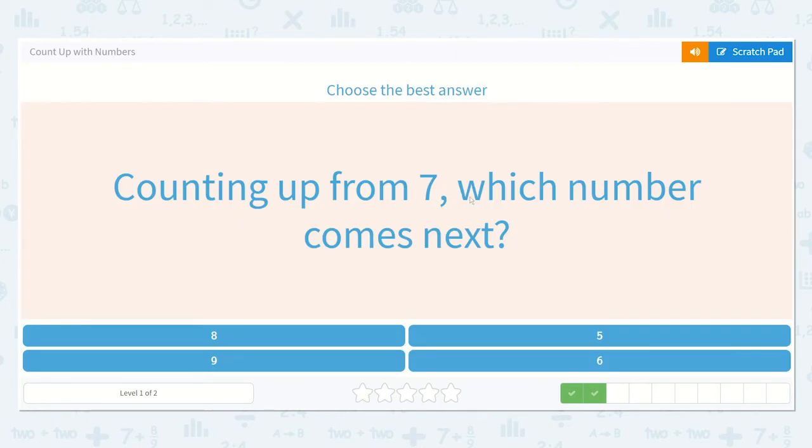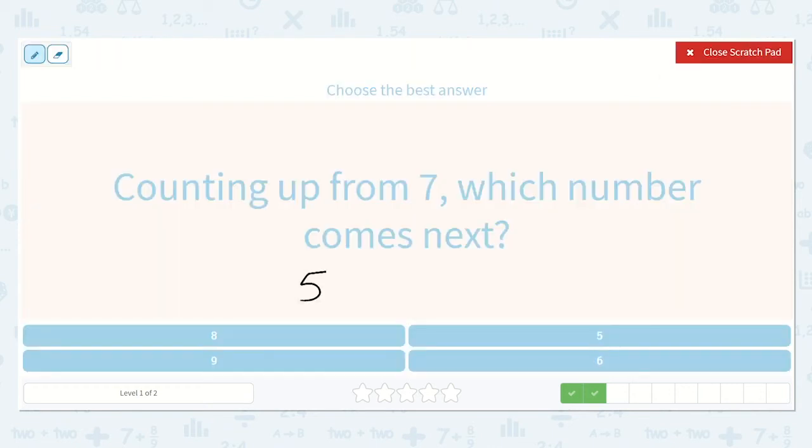All right, counting up from seven, which number comes next? So again, we can choose a small number and count up from that. So I know that five is smaller than seven, so I am going to write five, six, seven. What comes next?